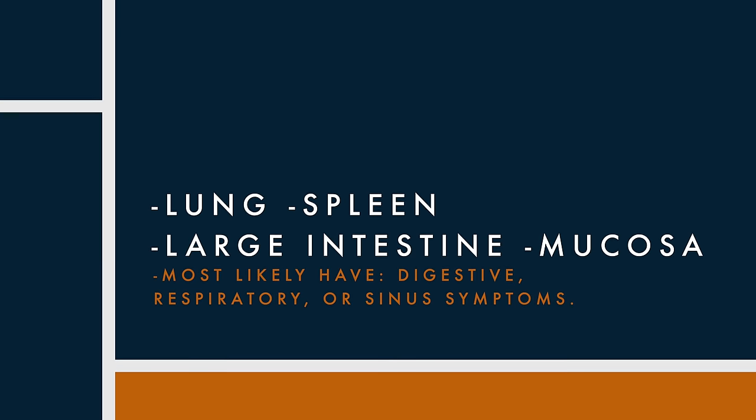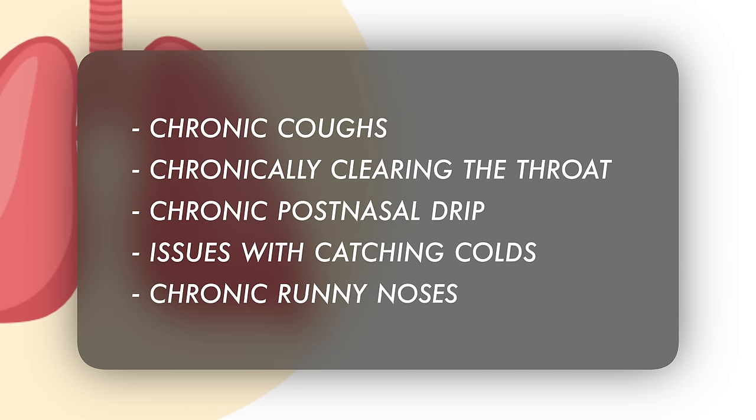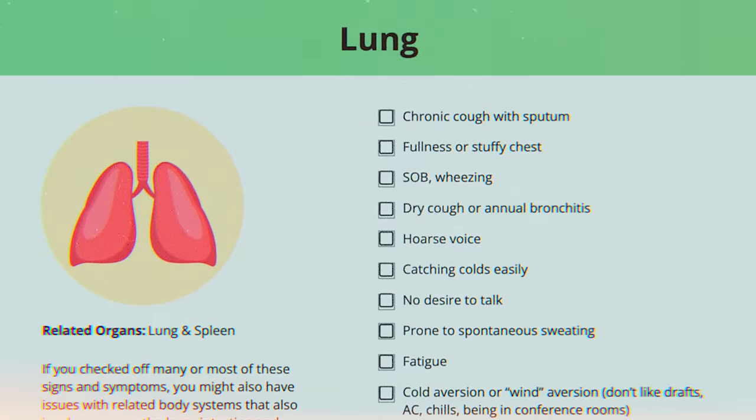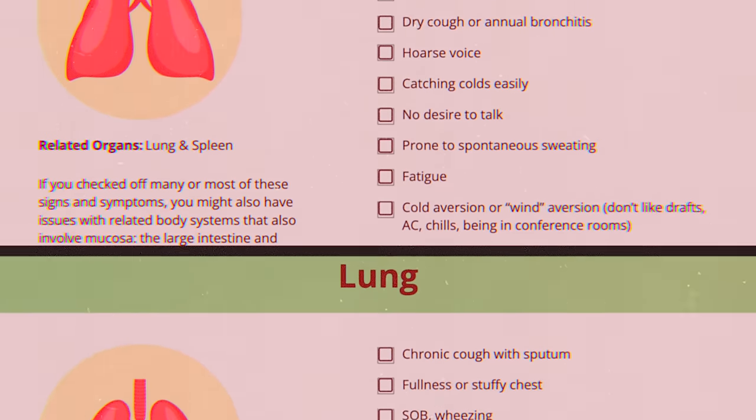Organ network number three: the lung, spleen, large intestine, and mucosal issues. There is overlap with the spleen-pancreas network. Lots of people who are genetically very phlegmy clear their throat a lot, have post-nasal drip, and have a tendency toward catching respiratory viruses. The mucosa appears in the lungs, in the ear, nose and throat, and also in the stomach — all areas that produce mucus to buffer the delicate mucosal lining. Symptoms include chronic coughs with sputum, chronic throat clearing, chronic post-nasal drip, catching colds easily, aversion to AC or drafts, and chronic runny noses. This person can present with GI issues, respiratory issues, and lots of ENT issues.